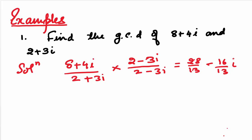Now, we will round off these fractions and that will give us our gamma. This I have already explained in the previous video. So, the gamma will be 2 minus i. We have rounded off 28 by 13 to 2 and minus 16 by 13 to 1.